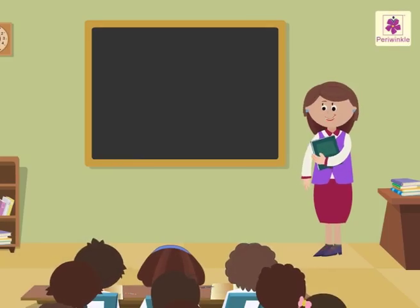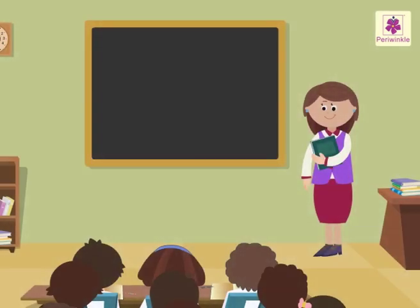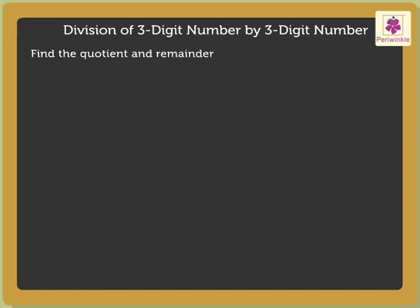Today, let us understand the division of 3, 4 and 5-digit numbers by a 3-digit number. Let us start with the division of a 3-digit number by a 3-digit number. Find the quotient and remainder when 952 is divided by 317.